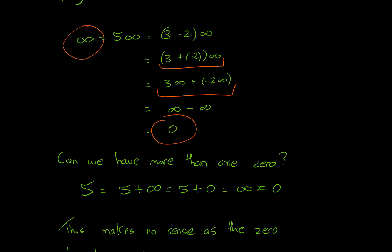And if you test it out, you get that it doesn't make sense, because 5 = 5 + ∞. But if ∞ is zero, that's the same thing as 5 + 0, which gives us ∞ = 0, which is not good for a vector space.